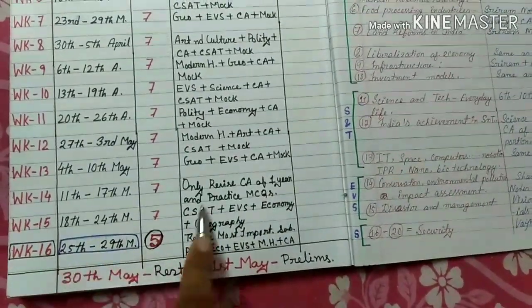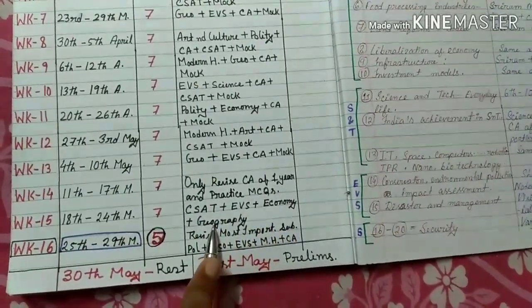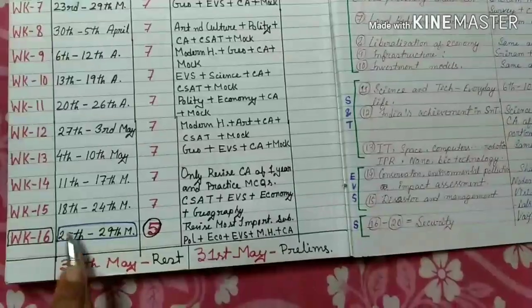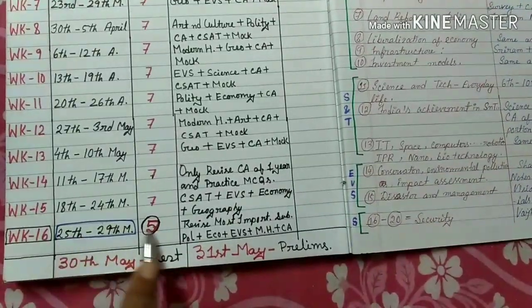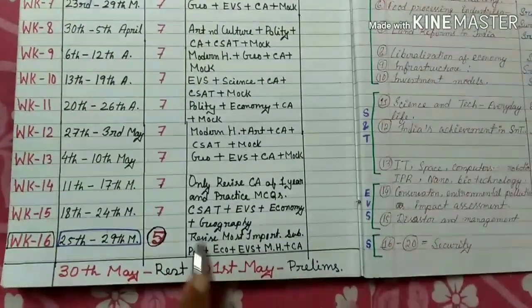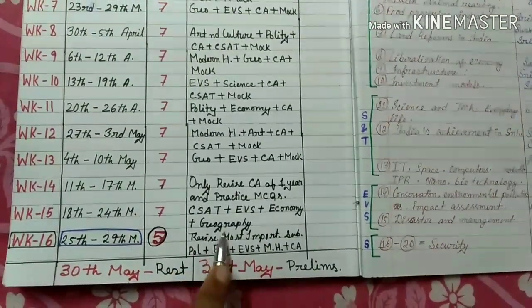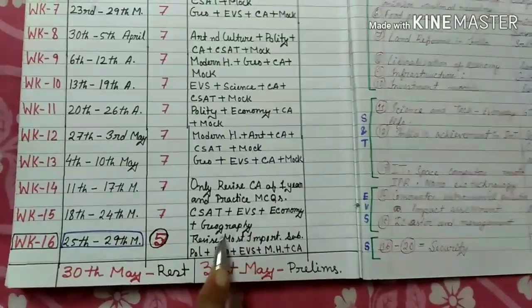Week 15 covers CSAT, EVS, economy, and geography. Week 16 is about five days only. In those five days, you have to revise almost every subject.